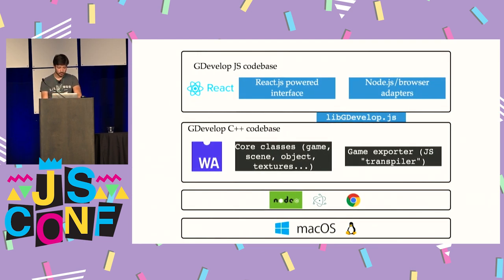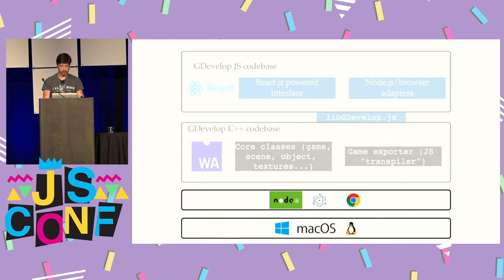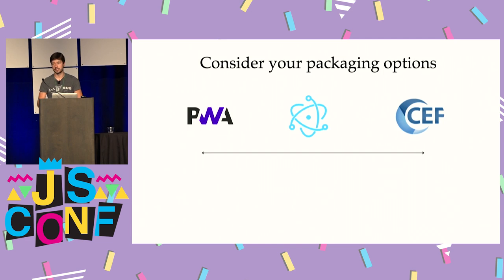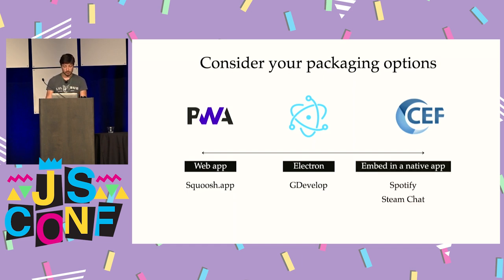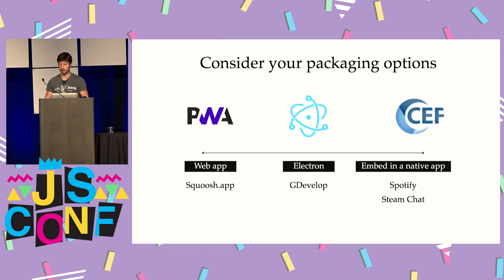Now we have the core of the software and an interface built on top of it. Let's see how to package this. We have a few packaging options: we could make a PWA since WebAssembly runs in the browser. In my case I used Electron so I can have access to the file system — because it's a game editor, people like to download an application and own it, and having file system access let me avoid making something that only works online, so the software works offline. In some cases you can even embed the JavaScript application inside a native application using Chromium Embedded Framework, if you have an existing native application and the manpower to do it.